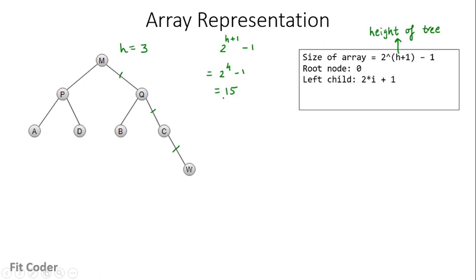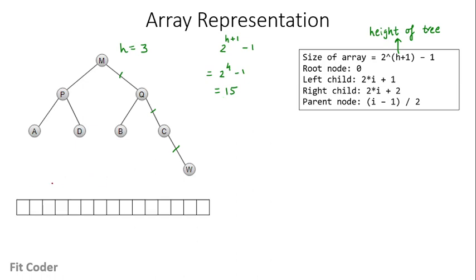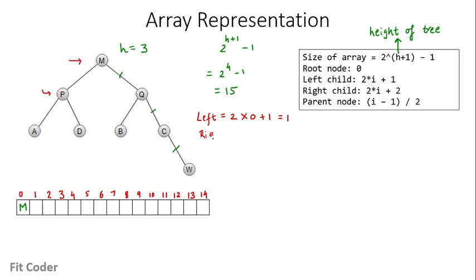The height is equal to the maximum number of edges from the root to a leaf node. Here the height is 3, so the array size is 2^(3+1) - 1 = 15. The root node goes at index zero. The left child is at index 2*i + 1, the right child at 2*i + 2, and the parent node is at index (i-1)/2. The root node M goes at index zero, then scanning level by level left to right: P is the left child of M so it goes at index 2*0+1 = 1, and Q goes at index 2.